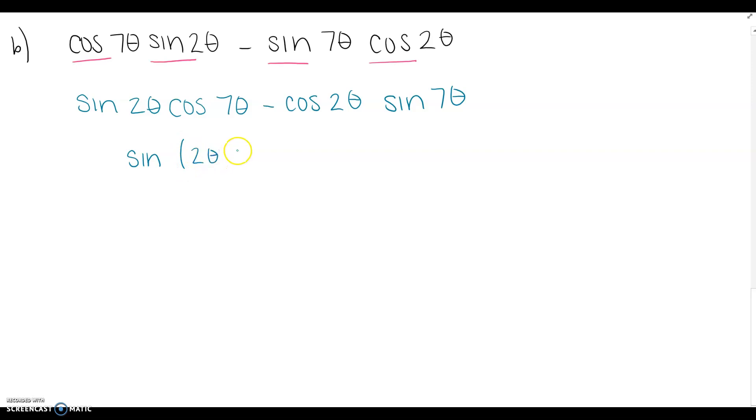Or sine difference identity is probably a better way to say that. I'm a little rusty. I haven't taught in a month. Okay. I forgot my subtraction. Sine of 2 theta minus 7 theta will be our next line. This is kind of similar to that first example we did together. 2 minus 7 is negative 5 theta. And then the even odd identity, what's sine of negative 5 theta? That's the same as negative sine of positive 5 theta. And we are done.